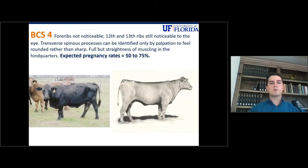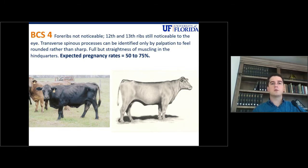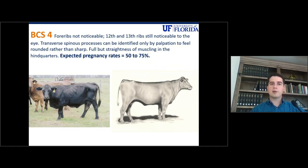A cow at body condition score 4: you will not see the forward ribs, but you will be able to see the last 2 to 3 ribs. And in this case, if she calves on a body condition score of 4, the expected pregnancy rates will be between 50% to 75%.